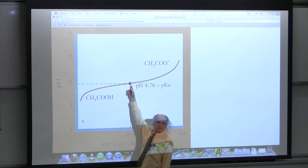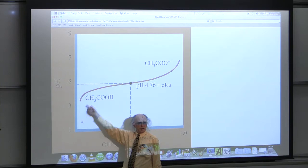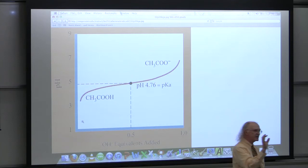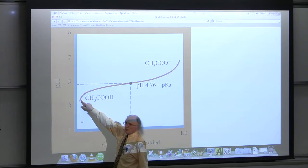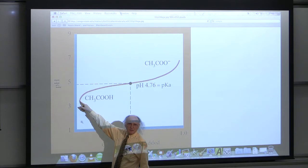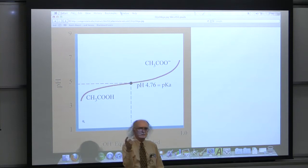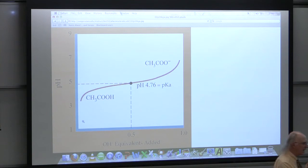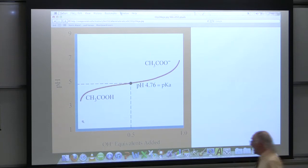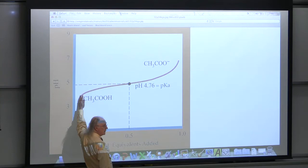From Henderson-Hasselbalch, imagine we get to a pH of 4.76, which is the pKa of acetic acid. At that point we're going to have an equal amount of salt and acid. So if we go from essentially no salt to equal amounts, there's got to be a transition in between — that's what this curve is showing us. At first the pH changes fairly rapidly, but then as we approach the pKa region, the curve starts to flatten out.